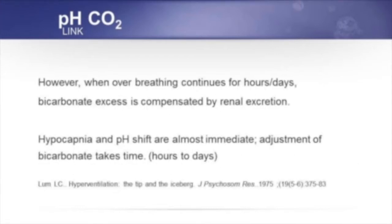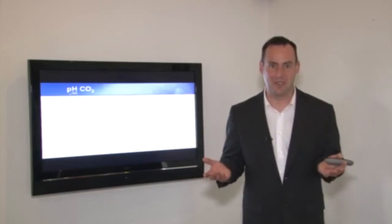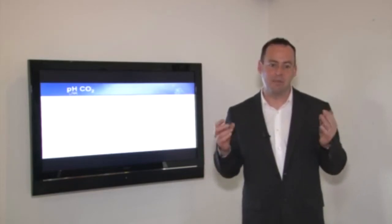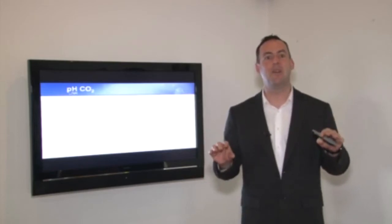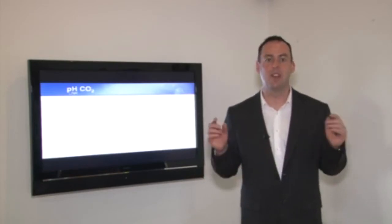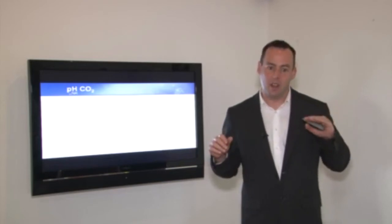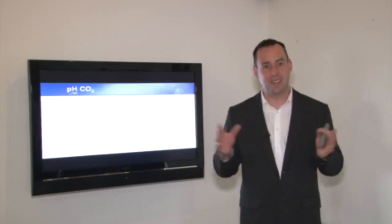However, if we're overbreathing for hours to days, we're still left with too little hydrogen ion and too much bicarbonate. The body wants to restore pH back to normal and doesn't want respiratory alkalosis, so the kidneys step in and dump bicarbonate. By the kidneys dumping bicarbonate, we're left with a situation of chronic hyperventilation — low hydrogen ion and low bicarbonate — and that's our buffer reduced.